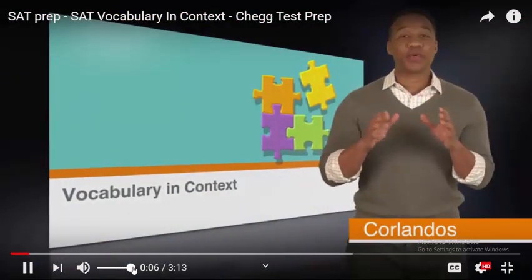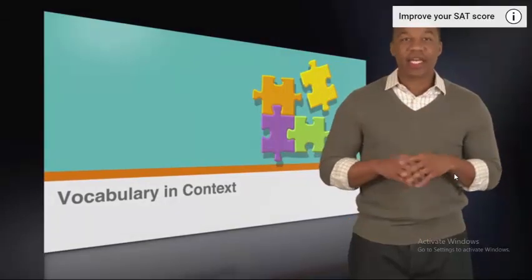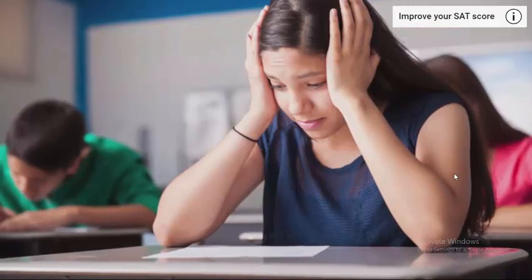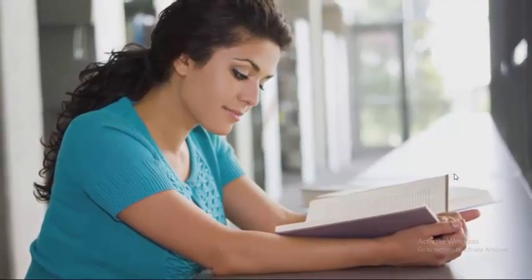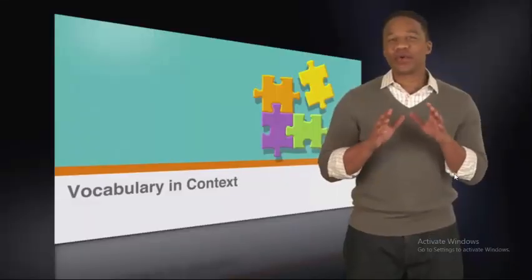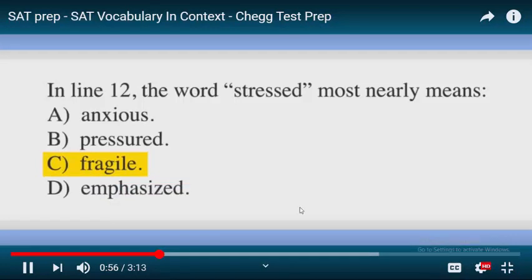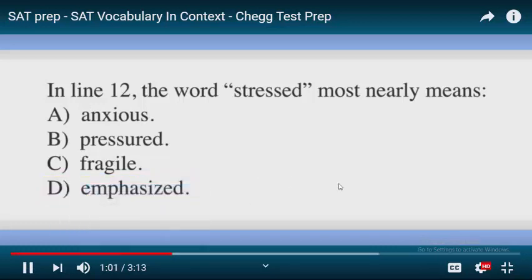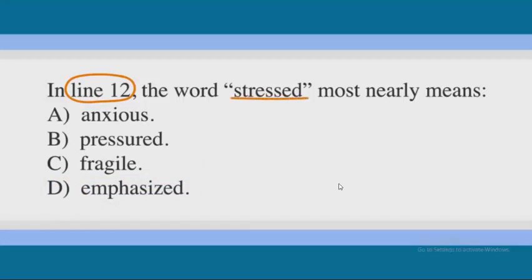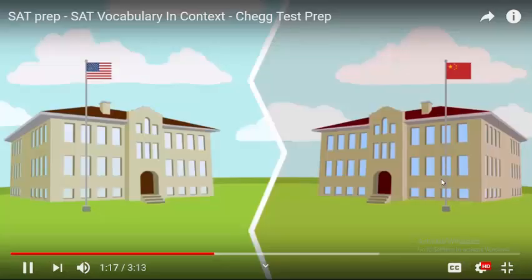You need to be able to read for context — using the parts of something written that immediately precede and follow a word or passage to clarify its meaning. For example, 'I'm a little stressed about the SAT' means something different than 'I really stressed the importance of reading skills.' Throughout this lesson you'll see questions asking about specific line references — vocabulary in context questions where you define what a word means.